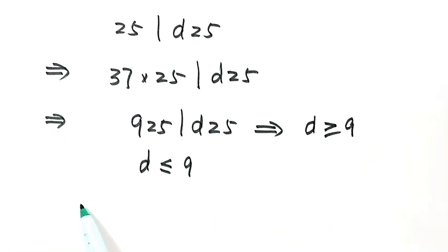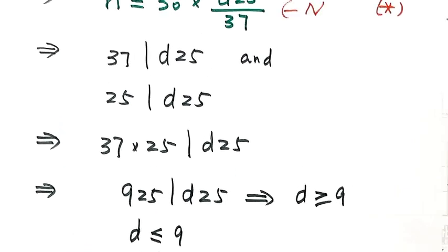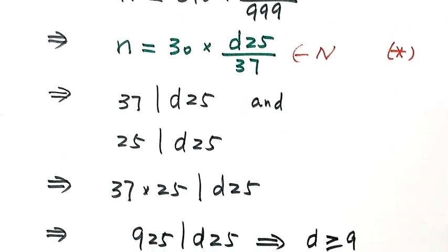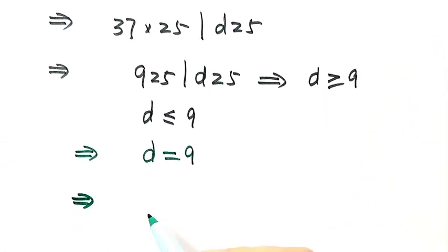Then combine these two. So that means d can only be 9. So now let's use 9 to replace d in here.